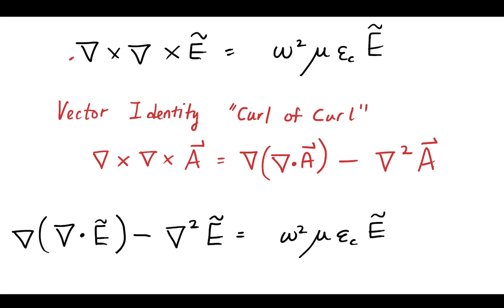So now we've applied this vector identity, the curl of the curl, and we've put it in here. And this is going to help us make a couple more simplifications.